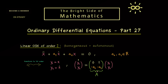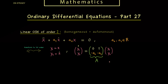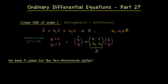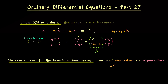We can immediately use the result from the last video, which tells us that two-dimensional linear systems are fully understood. More concretely, we can distinguish four different cases and find all solutions. To formulate these solutions we need two things: first, the eigenvalues of A, and second, the corresponding eigenvectors. This means we must calculate the zeros of the characteristic polynomial, and look at the non-zero elements of the corresponding eigenspaces.